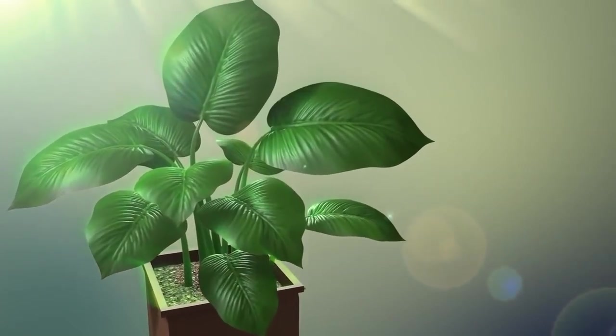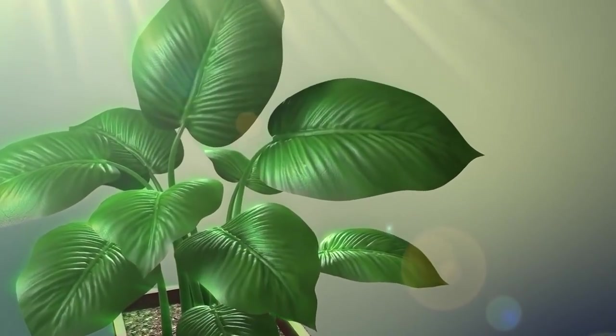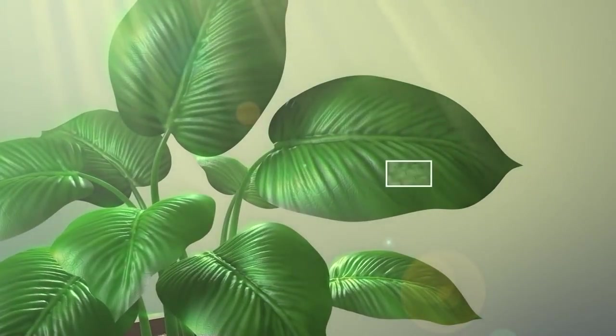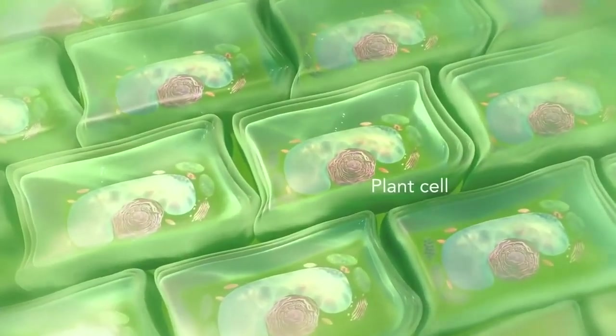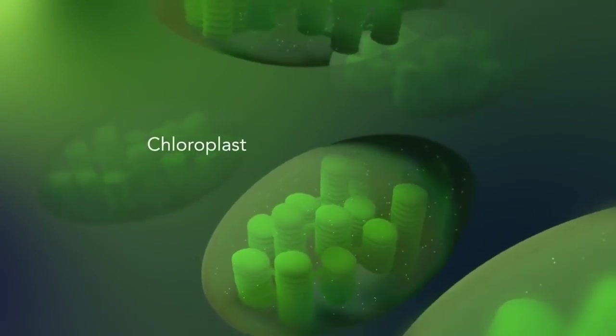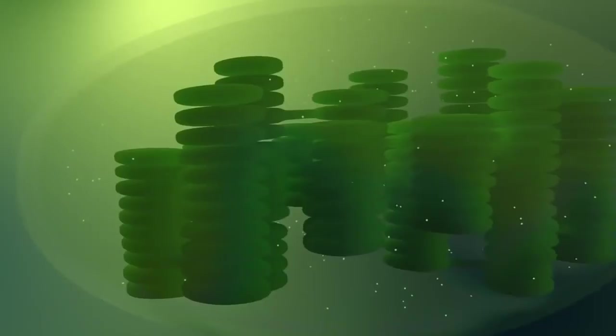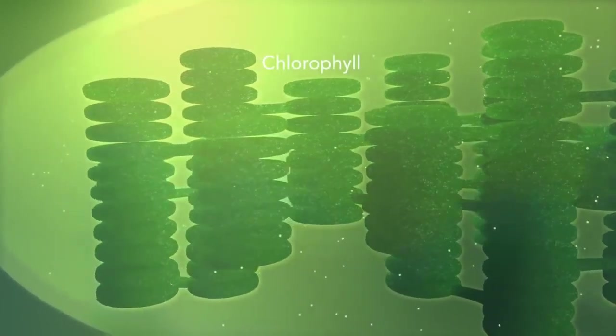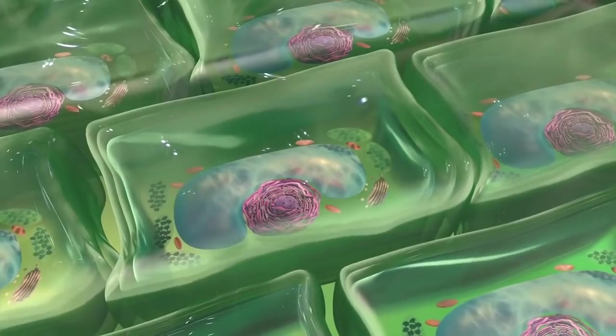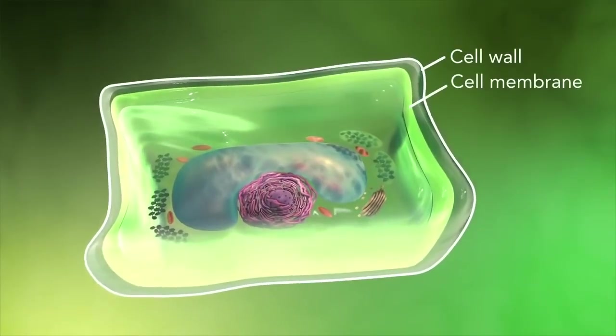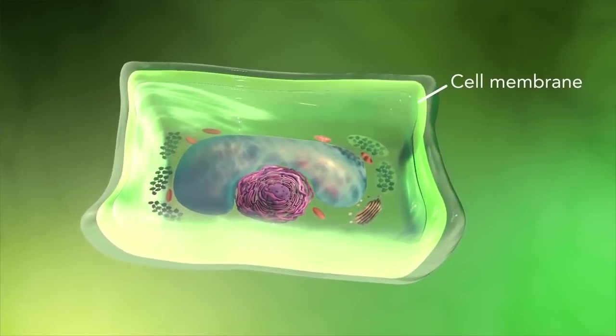Some organisms, such as plants that are photo-autotrophic, meaning they capture sunlight for energy, have cells with an organelle called chloroplast. The chloroplast is where photosynthesis happens. It's green because it has a green pigment called chlorophyll. Plant cells also have a cell wall outside of their cell membranes that shape, support, and protect the plant cell.